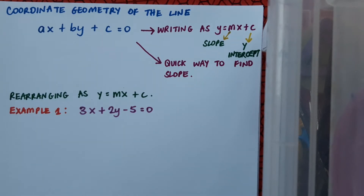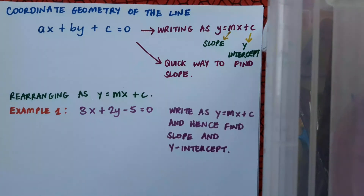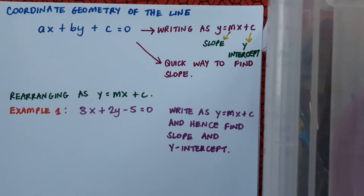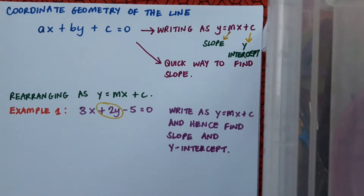In example one, we have the line 3x plus 2y minus 5 equals zero. We're going to write it as y equals mx plus c and hence find the slope and the y-intercept. To write it in that form means getting y by itself, and we'd ideally like this y to be positive. In this question, that's fine because it's already positive.